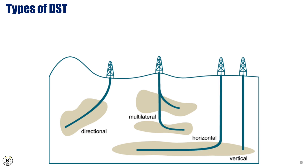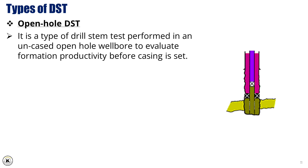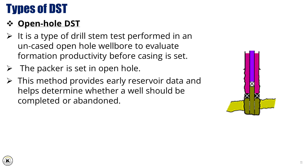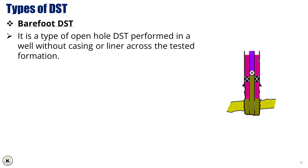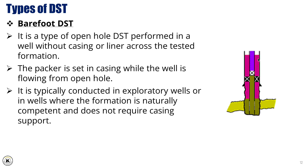Types of DST — well configurations: Different DST types may be used depending on well configuration, either vertical well, horizontal well, multilateral well, or deviated directional well. The most common types include open hole DST, which is performed in an uncased open hole wellbore to evaluate formation productivity before casing is set. The packer is set in open hole, providing early reservoir data and helping determine whether a well should be completed or abandoned. Barefoot DST is a type of open hole DST performed in a well without casing or liner across the tested formation. The packer is set in casing while the well is flowing from open hole, typically conducted in exploratory wells or in wells where the formation is naturally competent and does not require casing support.